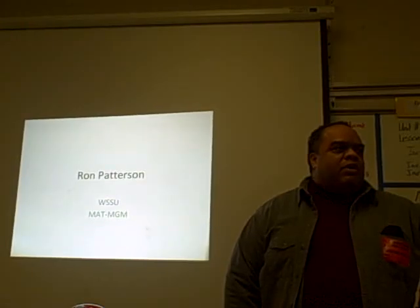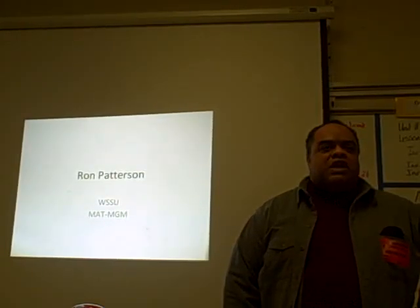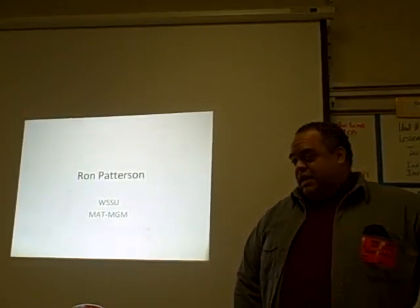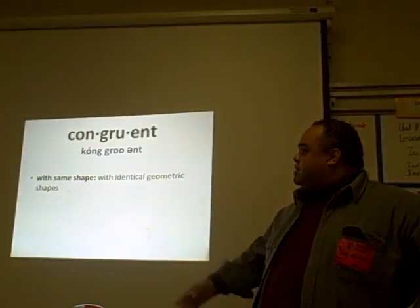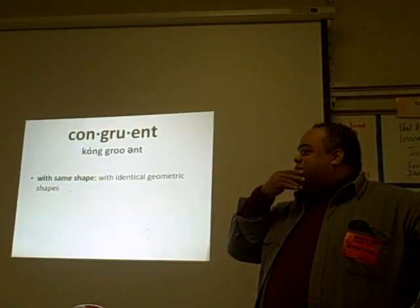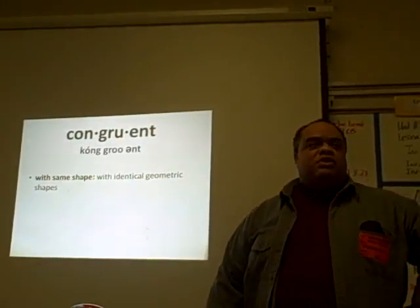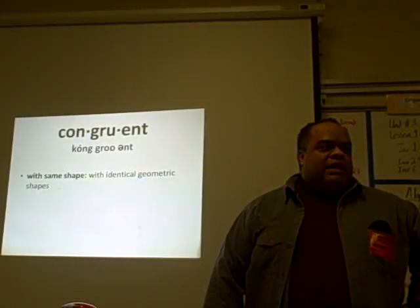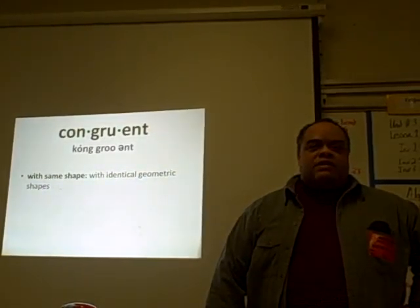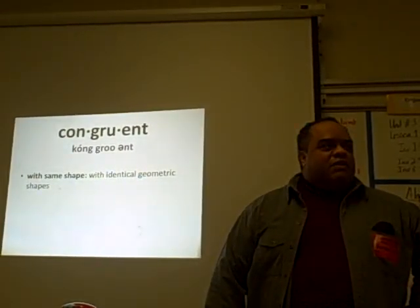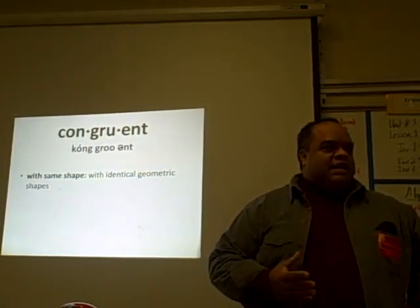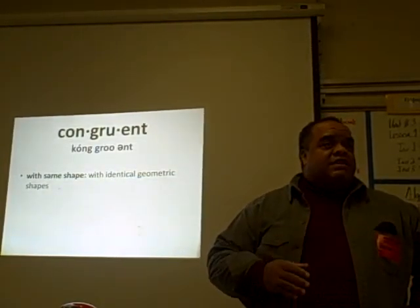But today we're going to talk about one thing in particular that refers to geometry, and that is congruency. Now, who knows what it says right here? Congruent means the same shape, or identical geometric shapes. To explain that: if you have two squares but they have different length or size, they're not congruent. Congruent, for all practical purposes, means equal — same size, same length, same angles, and the same shape.